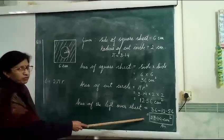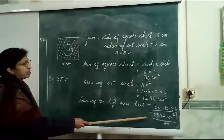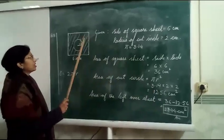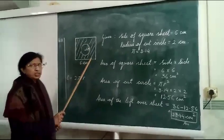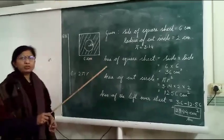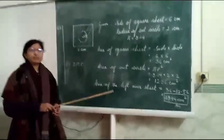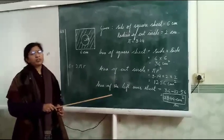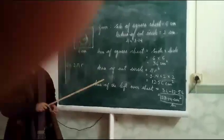This 23.44 cm square is the final area which is the area of the leftover sheet. Do both these questions in your notes copy. If you have any query, when you come to school we will discuss. That's all.